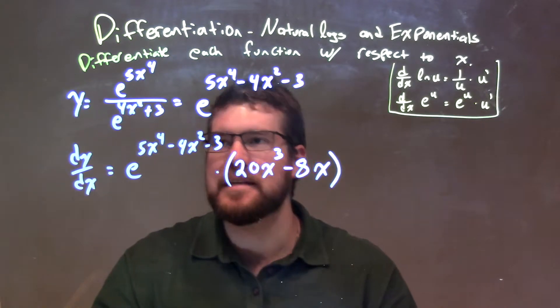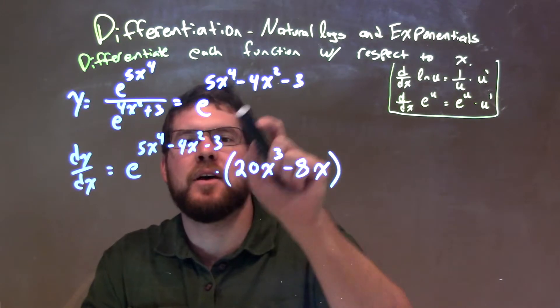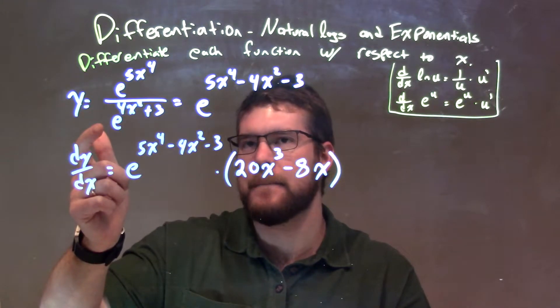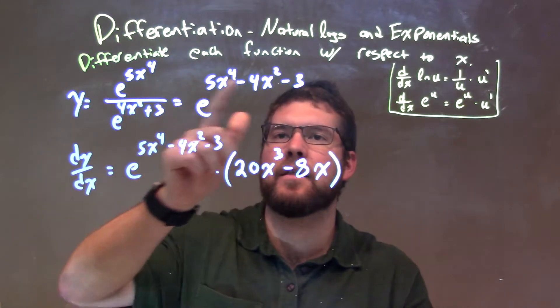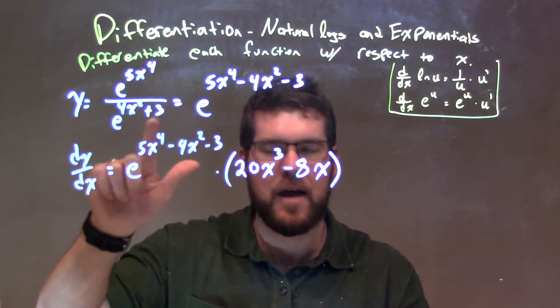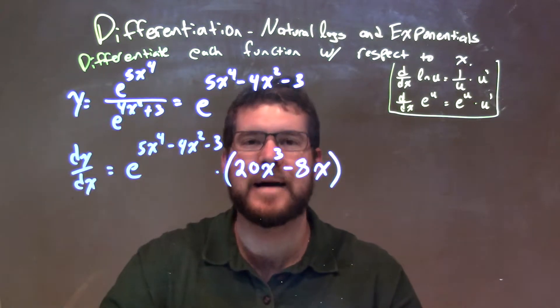Easiest way to do this is, instead of just taking a quotient rule right from the get-go, is to simplify using our rules of exponentials. We can combine these two because they have the same base. We just subtract the exponents. When I subtract the exponent, I have 5x to the 4th minus the denominator exponent, but I distribute that minus sign to both parts. We have minus 4x squared minus 3.